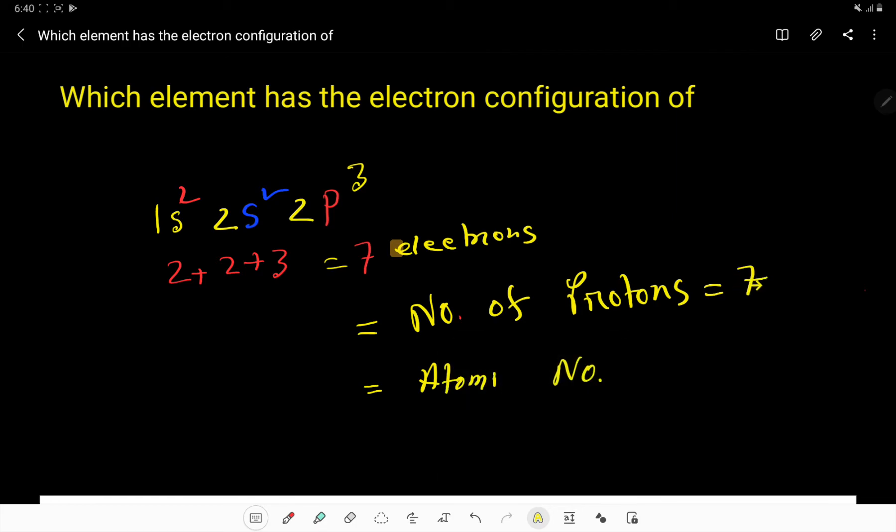The charge of protons is positive and the charge of electrons is negative. We also know that the number of protons is called the atomic number. So the atomic number here will be 7.